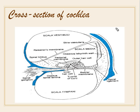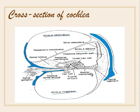In this diagram, the uppermost is the scala vestibuli, the lowermost is the scala tympani, and in the center lies the scala media. The inner hair cells lie on the osseous spiral lamina, while the outer hair cells lie on the basilar membrane.